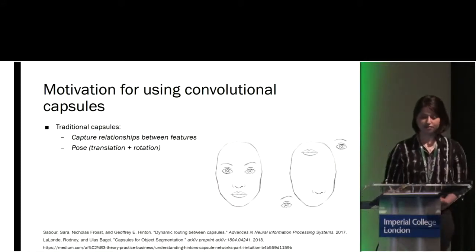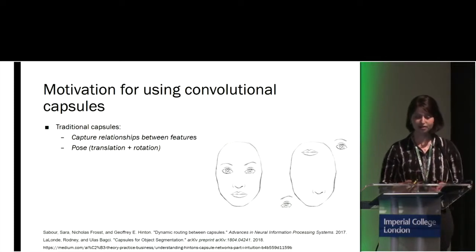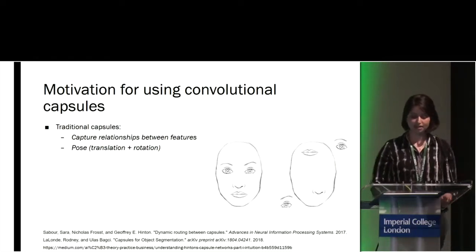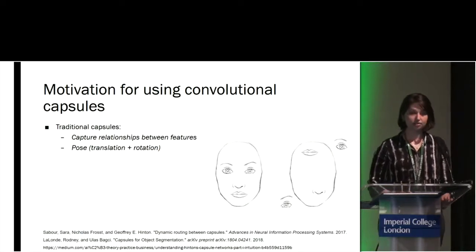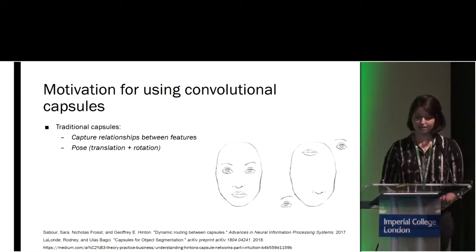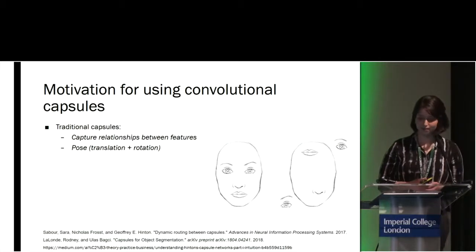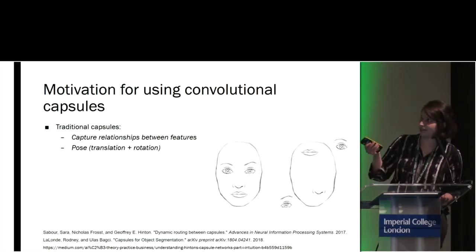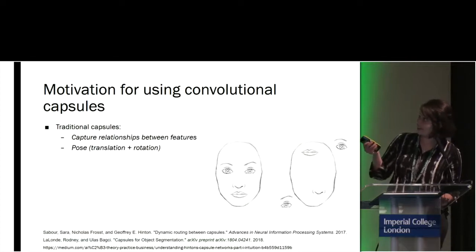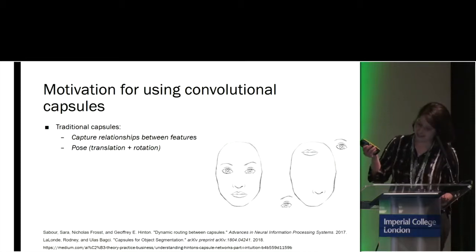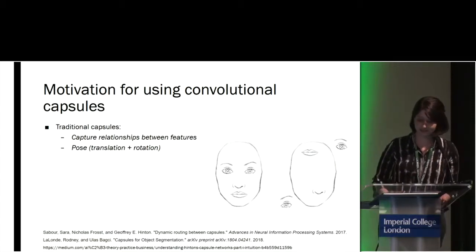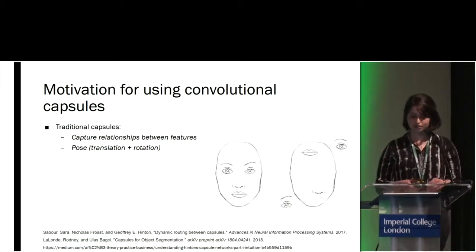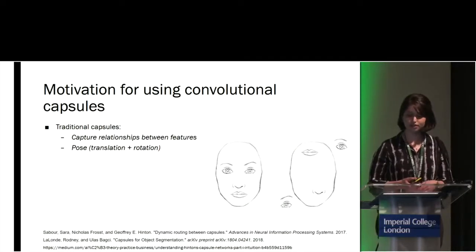We use convolutional capsules as our generator network. First of all, why would we want to use capsules at all? Capsules were first introduced in 2017 by Sabour and Geoffrey Hinton as a way to tackle problems with CNNs. In CNNs one of the biggest problems is that they are unable to learn spatial relations between features. We see this image of a face — we can clearly tell it is a face — but we know that this image is not a face as the eye and the mouth should not be at the top. A CNN might still classify that as a face since it doesn't actually capture how these features are related in space.